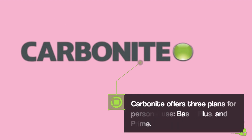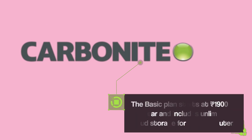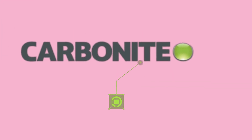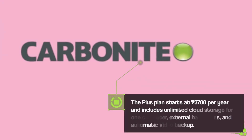Carbonite offers three plans for personal use: Basic, Plus, and Prime. The Basic plan starts at 1,900 rupees per year and includes unlimited cloud storage for one computer. The Plus plan starts at 3,700 rupees per year and includes unlimited cloud storage for one computer, external hard drives, and automatic video backup.